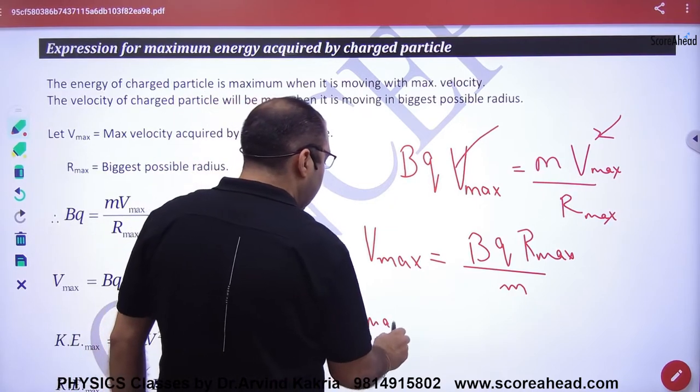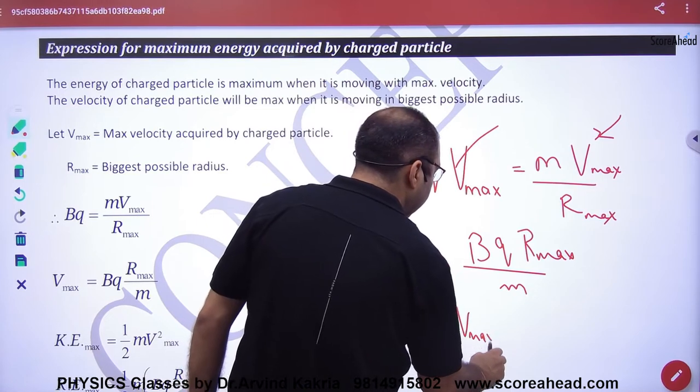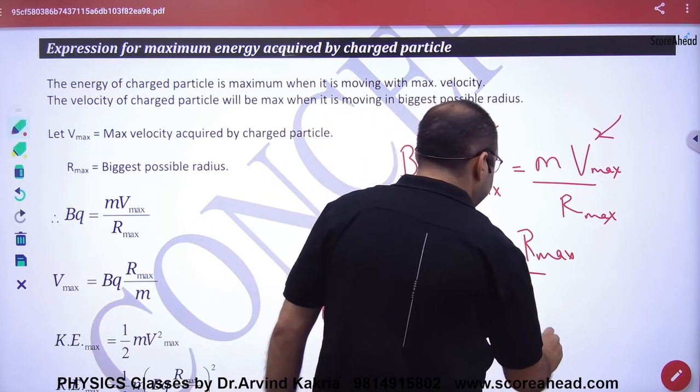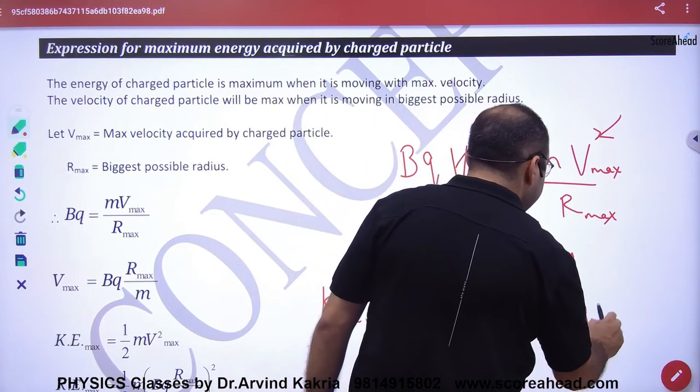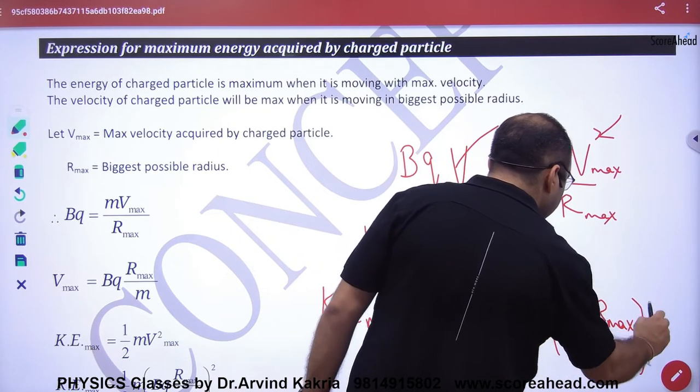will be equal to 1/2 * m * v_max². That's 1/2 * m * (Bq*r_max/m) the whole square.